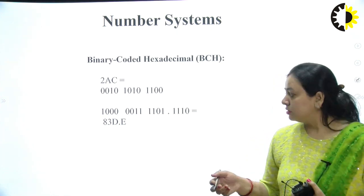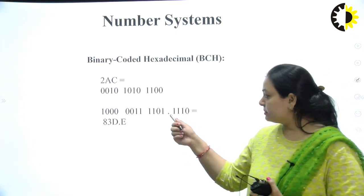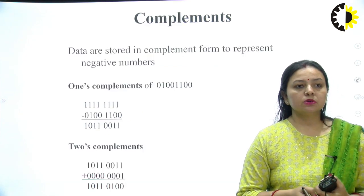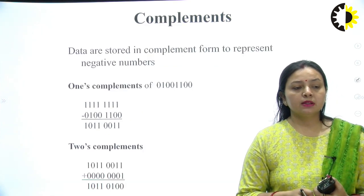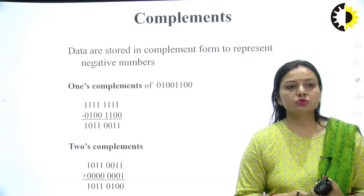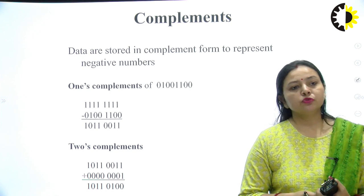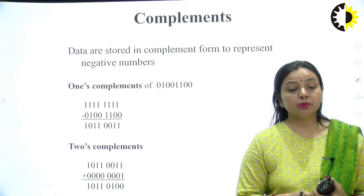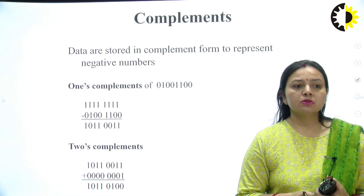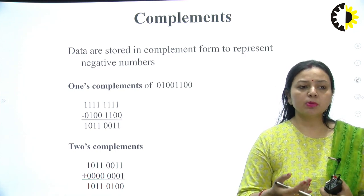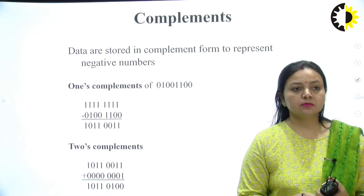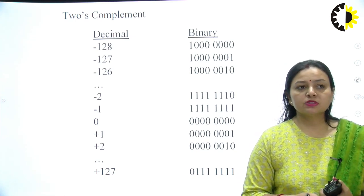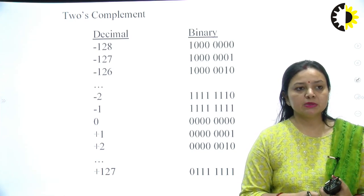The same conversion approach applies with decimal point numbers. Finally, complements: to represent negative numbers, you use 1's complement and 2's complement. The 2's complement is nothing but the 1's complement plus 1. This slide shows the 2's complement of various decimal numbers.